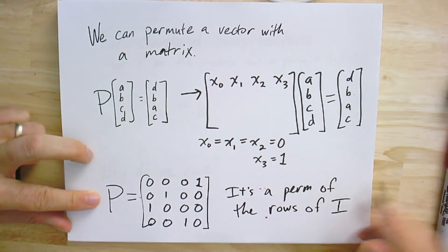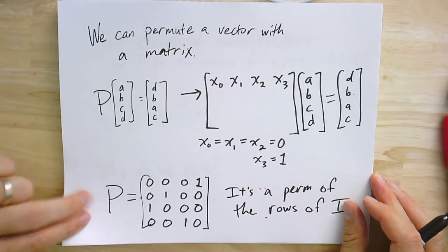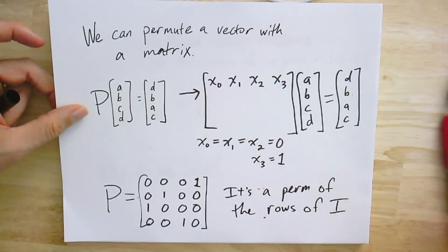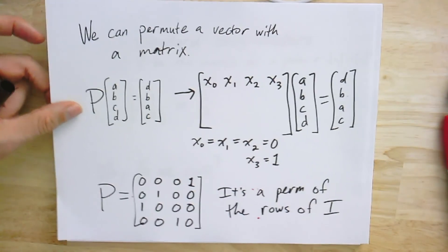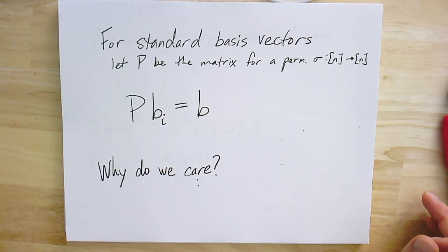So in a way, this permutation matrix P is a permutation of the rows of the identity — let's just call it I. That's one way to get it. We can also write out explicitly what it is. Perhaps the best way is to first think about what the matrix does to standard basis vectors.